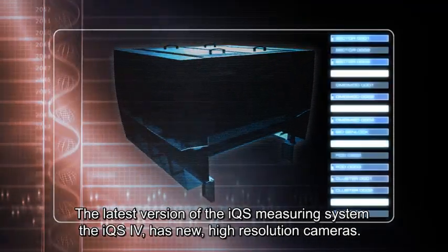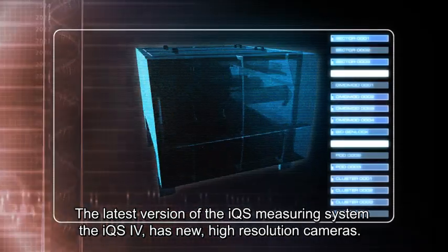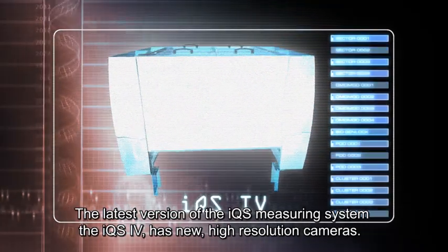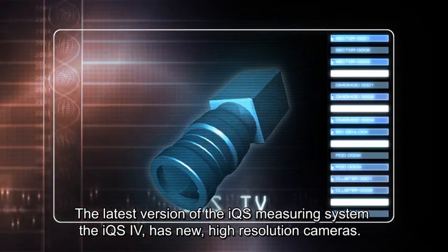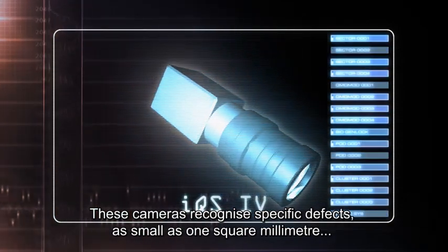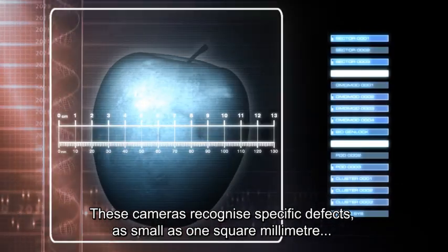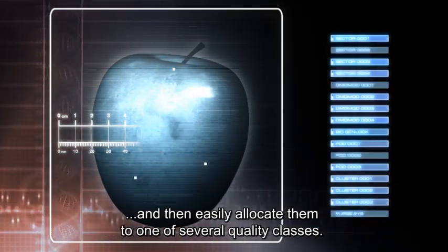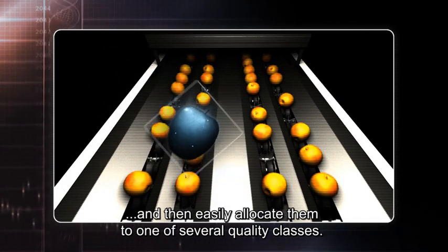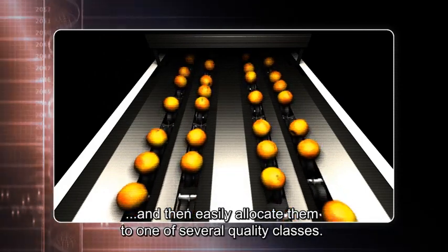The latest version of the IQS measuring system, the IQS-4, has new high-resolution cameras. These cameras recognize specific defects as small as one square millimeter and then easily allocate them to one of several quality classes.